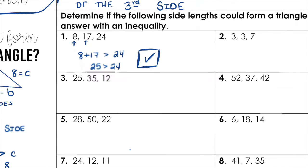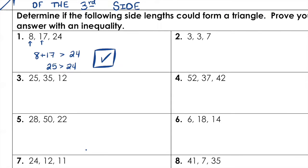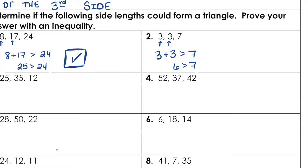Number two. Our two smaller sides are 3 and 3. We add those together: 3 plus 3 is 6. Is 6 greater than 7? No. So we cannot form a triangle. The sum of the two smaller sides must always be greater than the length of the third. Always.